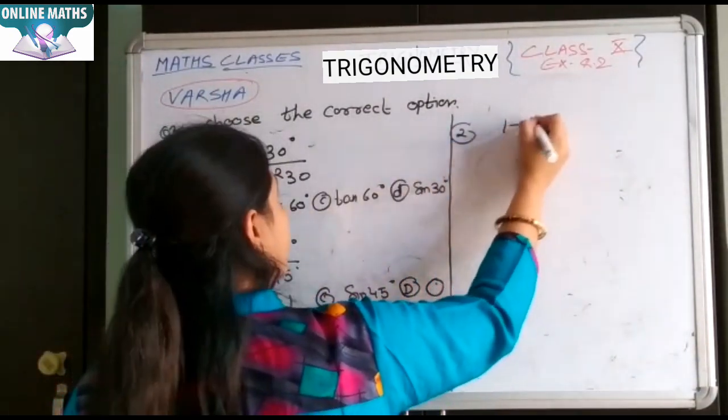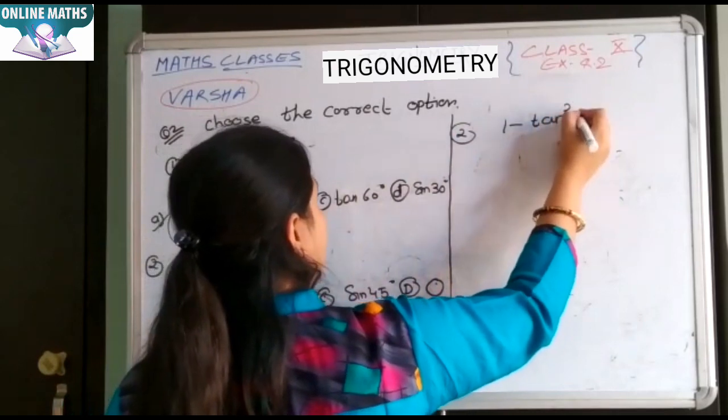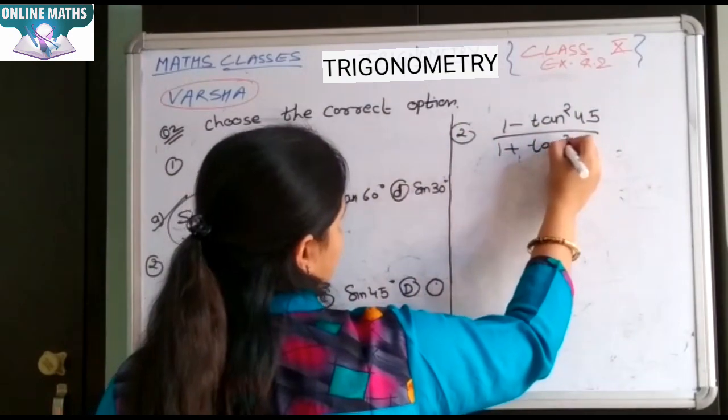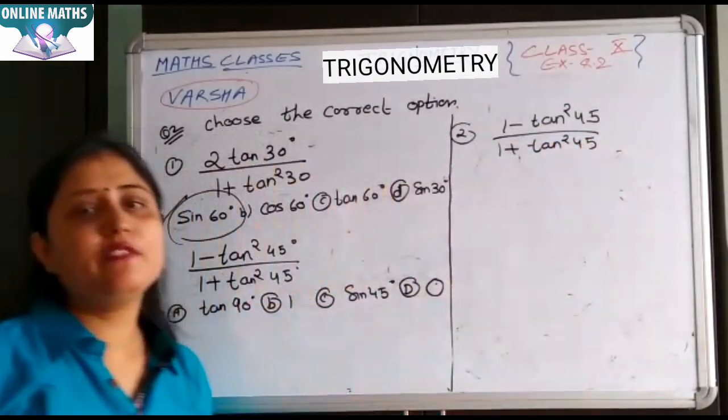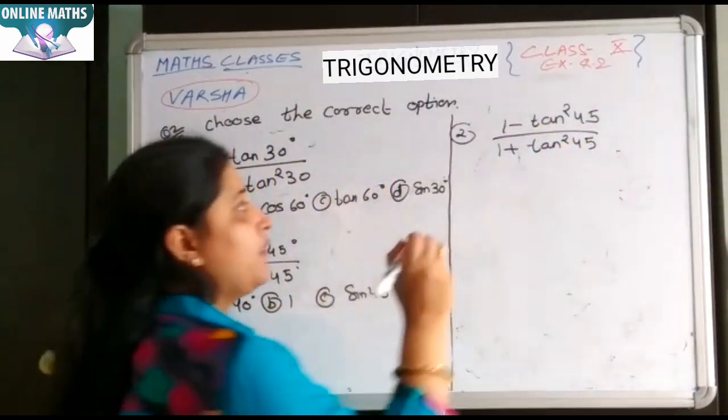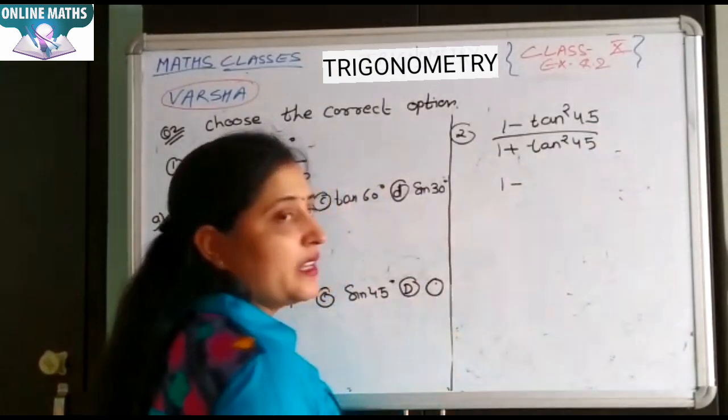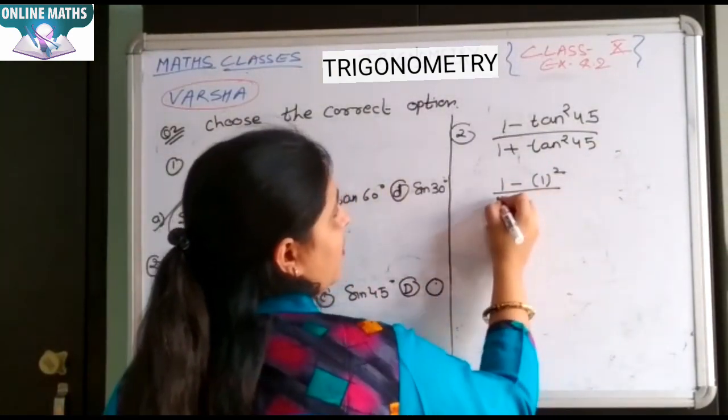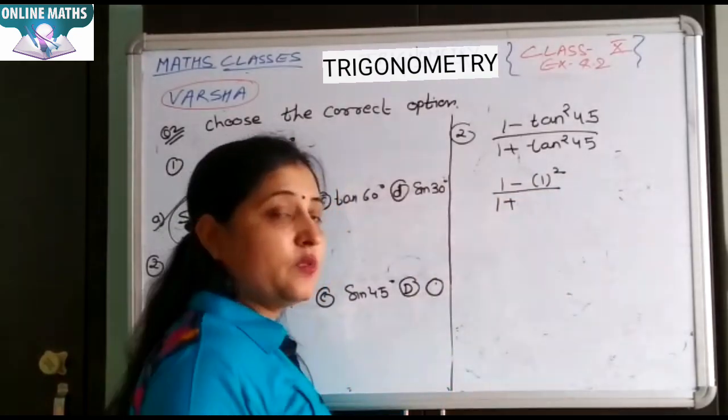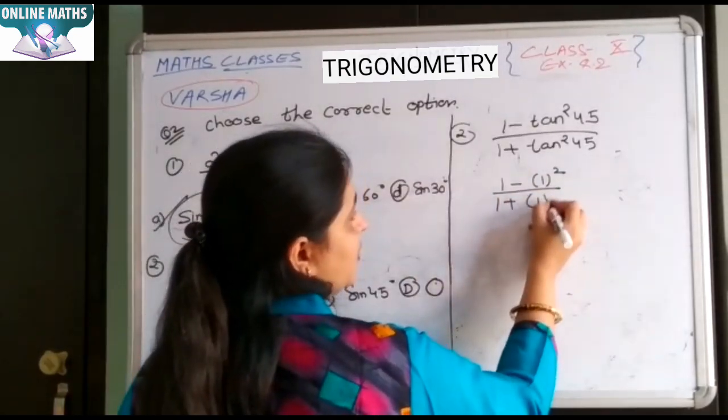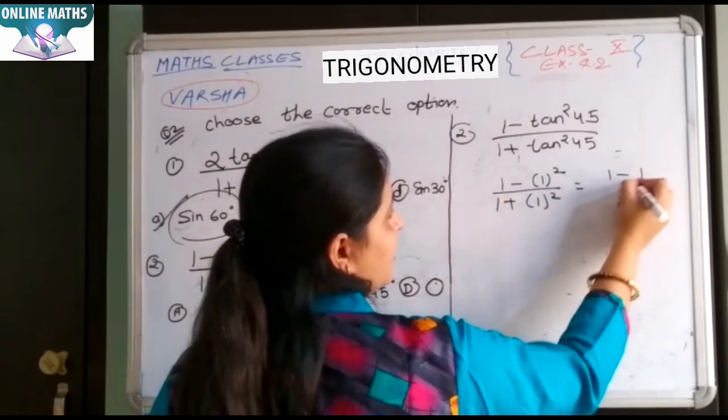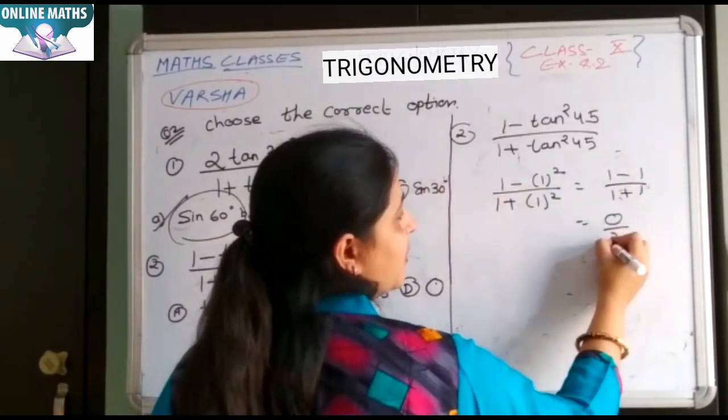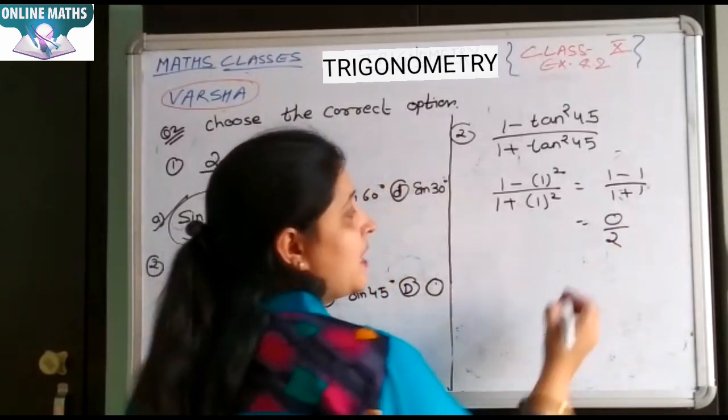B second. 1 minus tan² theta upon 1 plus tan² 45. Tan 45 ki value kya hoti? 1. 1 minus tan² 45 means 1² upon 1 plus tan² 45 again 1². 1 minus 1 upon 1 plus 1. 1 minus 1 is 0. 0 upon 2.